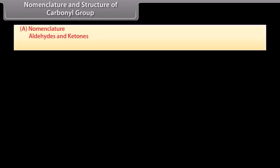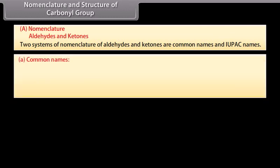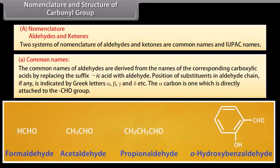Nomenclature and structure of the carbonyl group — Nomenclature of aldehydes and ketones. Two systems of nomenclature are common: common names and IUPAC names. The common names of aldehydes are derived from the names of the corresponding carboxylic acids by replacing the suffix '-ic acid' with '-aldehyde'. Position of substituents in the aldehyde chain, if any, is indicated by Greek letters alpha, beta, gamma, and delta. The alpha carbon is the one directly attached to the aldehydic group.